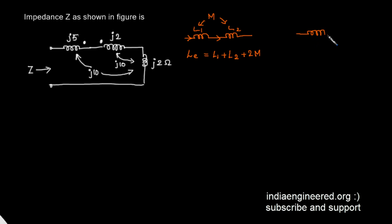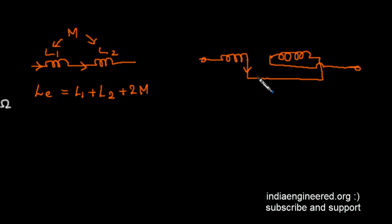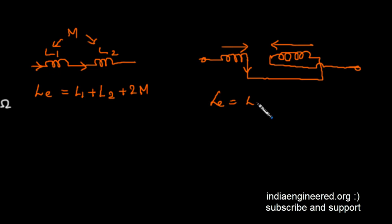Now what will be the opposing configuration? In this coil the current is in one direction, and here it is in the opposite direction based on the placement. Here the coupling aids the magnetic field, and here it opposes, so the equivalent inductance will be L1 plus L2 minus 2M.